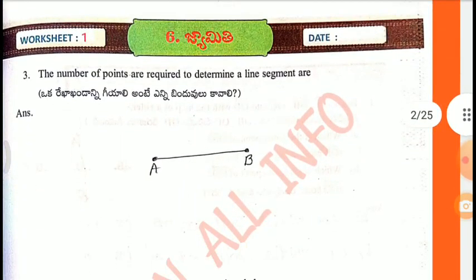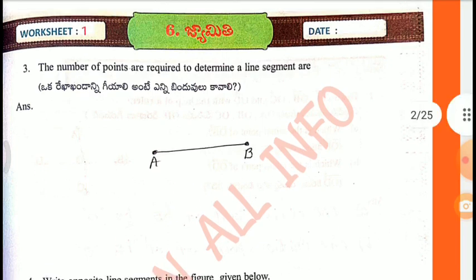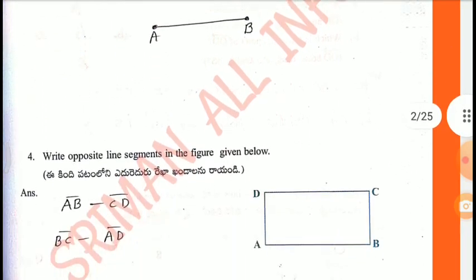Third one: The number of points required to determine a line segment. Answer: Two points, A and B.